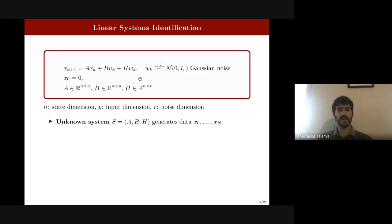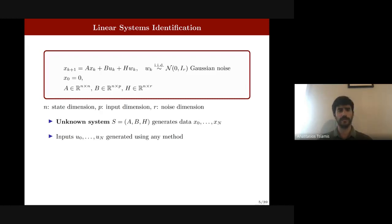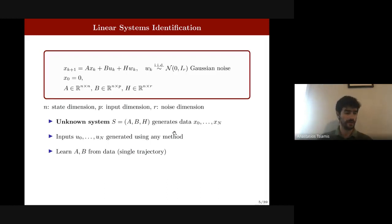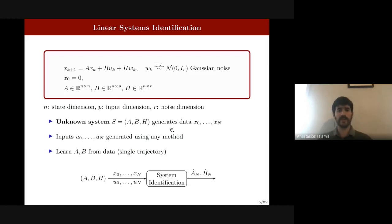The problem formulation: we have an unknown system that generates state data sequentially. We also have input data, which we can generate using any method — white noise or active learning. The goal is to learn the unknown A and B matrices. We consider single-trajectory data but the results can adapt to multiple rollouts. The block diagram shows the system generating data, then system identification producing estimates.